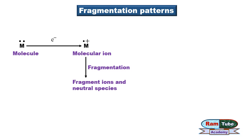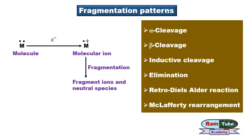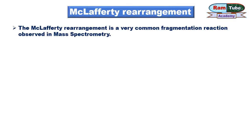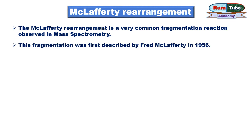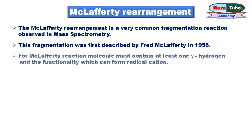All the radical ions are detected by the mass detector, but not the neutral species. These are some of the fragmentation patterns followed by the molecular ions, out of which we are going to discuss the McLafferty rearrangement reaction. The McLafferty rearrangement is a very common fragmentation reaction observed in mass spectrometry, first described by Fred McLafferty in 1956.